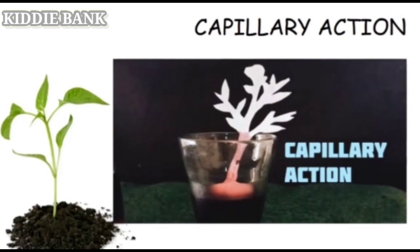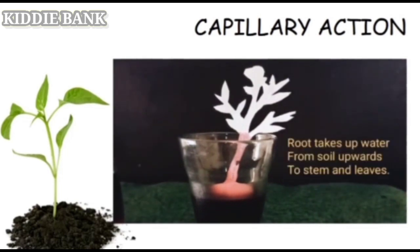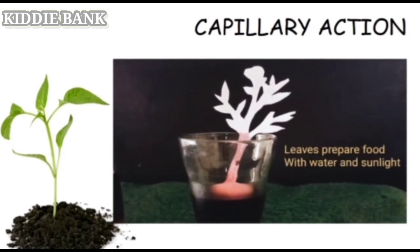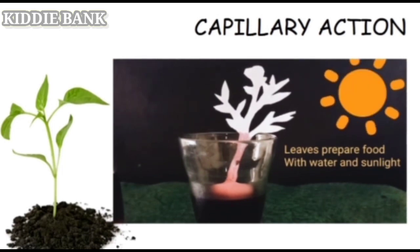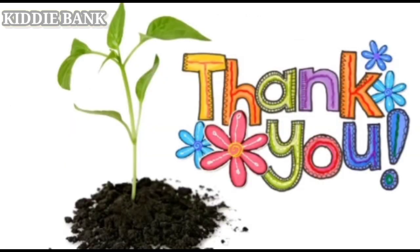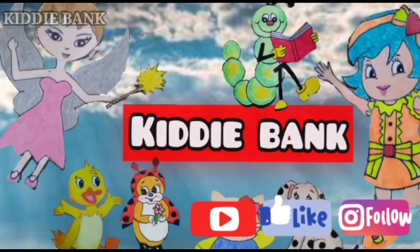So children, this is how a plant takes water from the soil. Through roots, the water travels upwards towards the stem and leaves. And leaves prepare the food for the whole plant using water and sunlight. Thank you. Please don't forget to subscribe our channel, Kiddie Bank.